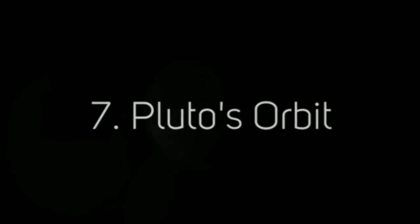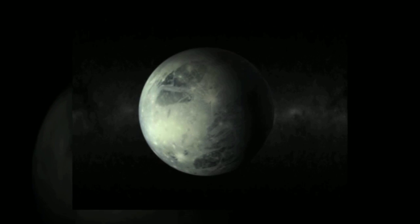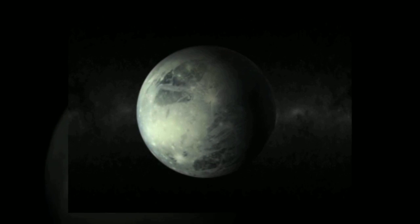The dwarf planet Pluto takes 248 Earth years to orbit the Sun, meaning that since its discovery in 1930, it has only traveled around 33% of its orbit.